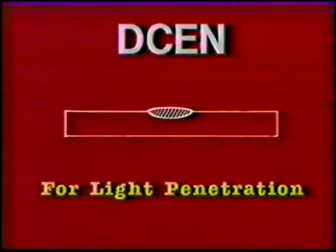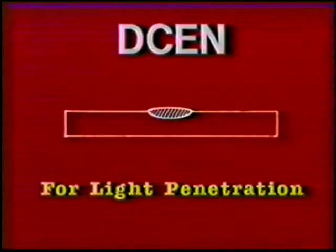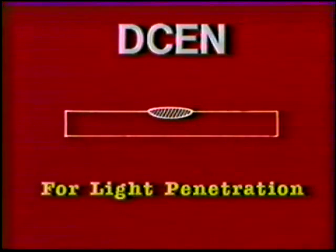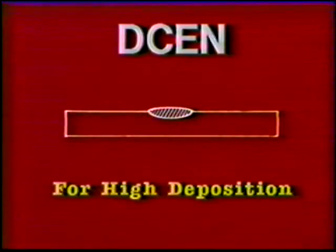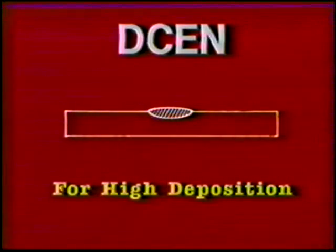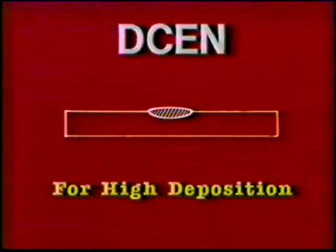Direct current electrode negative is normally used for shallow penetration. In general, electrode negative provides higher deposition rates than electrode positive. The selection of polarity depends on the type of equipment and electrodes available.